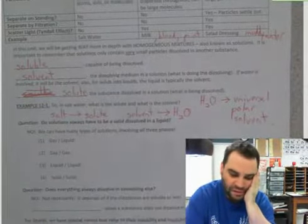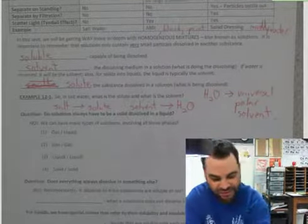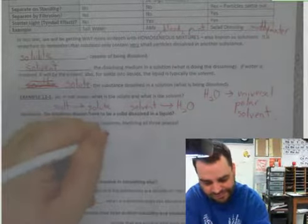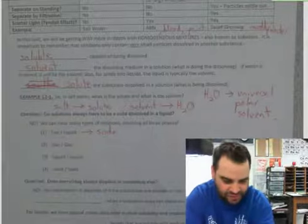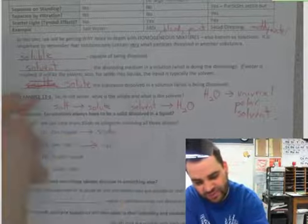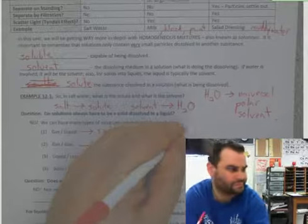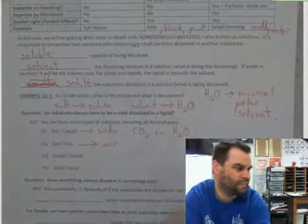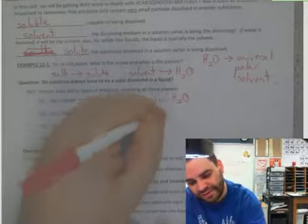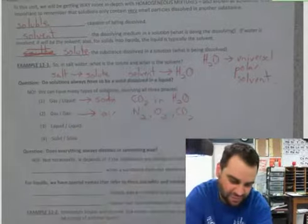There are many different types of solutions, all involving three phases. We can have gas and liquid. Our example would be soda. Gas and gas would be air. In soda, we have carbon dioxide in water. In air, we have nitrogen, oxygen, carbon dioxide, a bunch of stuff here.